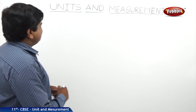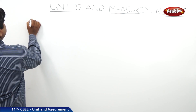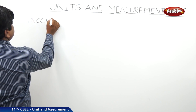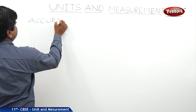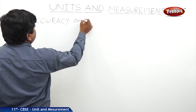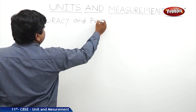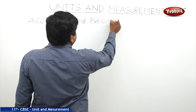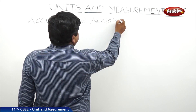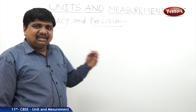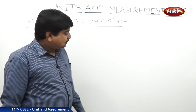The next concept we are discussing in this lesson is accuracy and precision. These two are not the same; they are different in the view of physics.